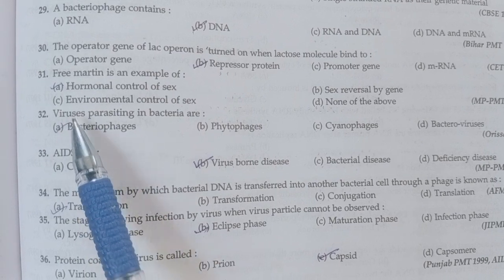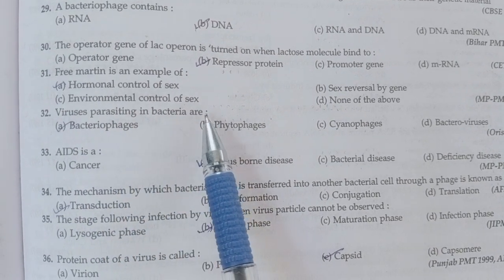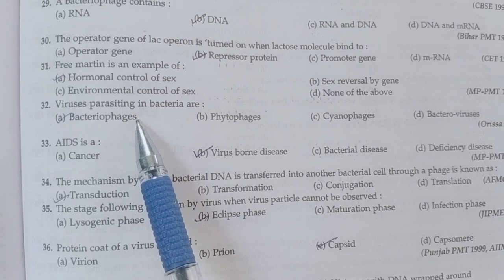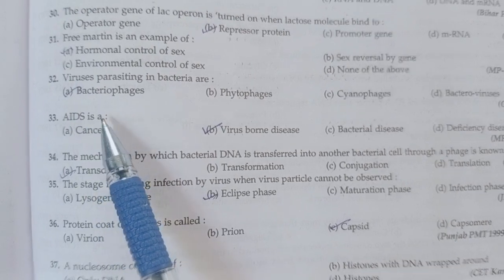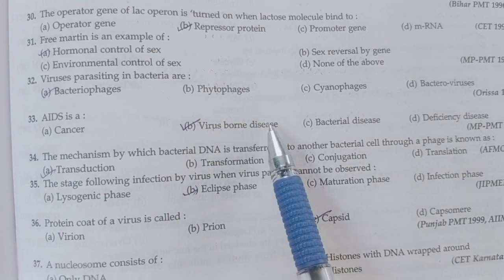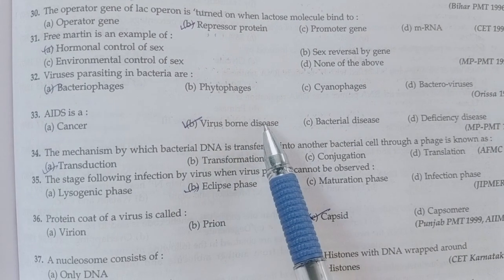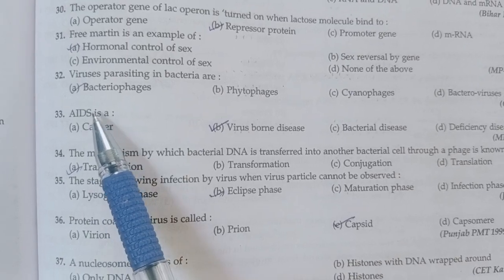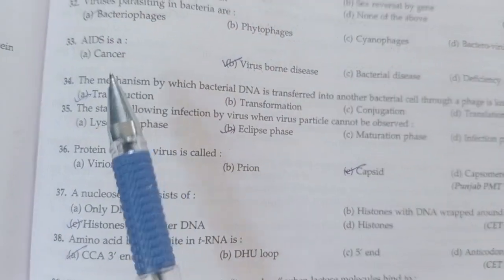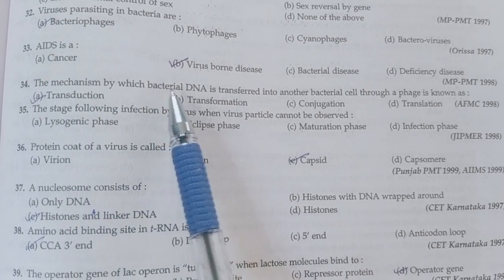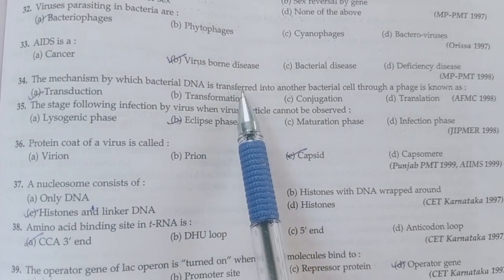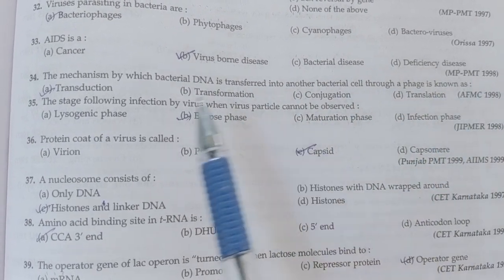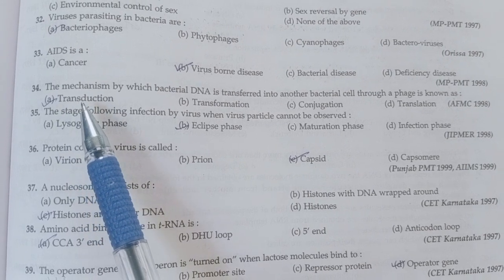Next: Viruses parasitizing in bacteria are — option A is correct, that is bacteriophages. Next: AIDS is a virus-borne disease — option B is correct. AIDS stands for Acquired Immunodeficiency Syndrome. The mechanism by which bacterial DNA is transferred into another bacterial cell through a phage is known as — option A is correct, that is transduction.